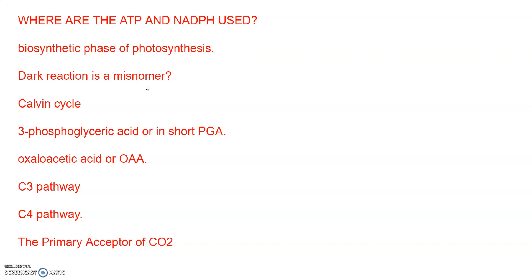Now let us see how ATP and NADPH are used in the biosynthetic phase. Carbon dioxide is combined with water to produce sugars, and scientists were interested in finding out how this reaction is fixed. Just after World War II, several efforts were made to use radioisotopes for beneficial purposes, and the work of Melvin Calvin is exemplary.